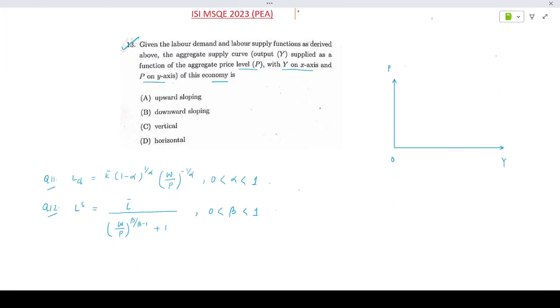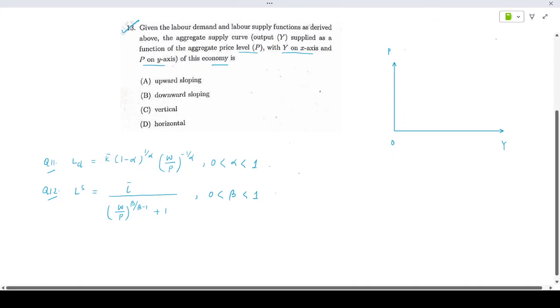Using these two pieces of information, we need to understand how the aggregate supply curve of the economy will look like. If we rewrite the labor demand function, we get k bar * (1-alpha)^(1/alpha) * (p/w)^(1/alpha).